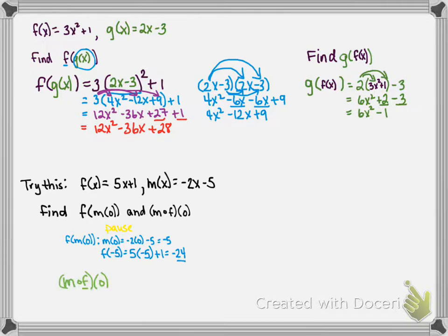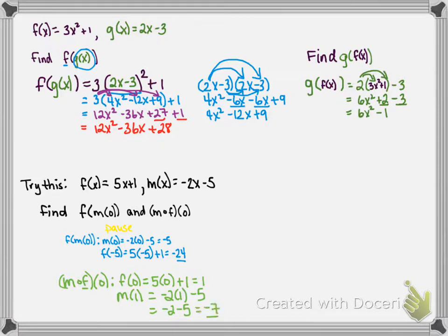Now let's find m of f of 0. Since f is the closest function to the value, we use it first. f of 0 equals 5 times 0 plus 1, which is 1. Now we take that 1 and substitute it into the m function: m of 1 equals negative 2 times 1 minus 5, which is negative 2 minus 5, or negative 7. So m of f of 0 equals negative 7. Again, taking the composition in a different order gives a different value.